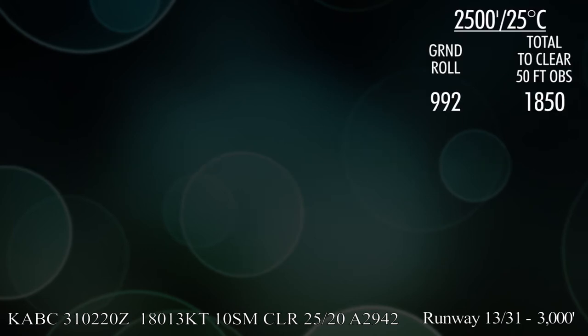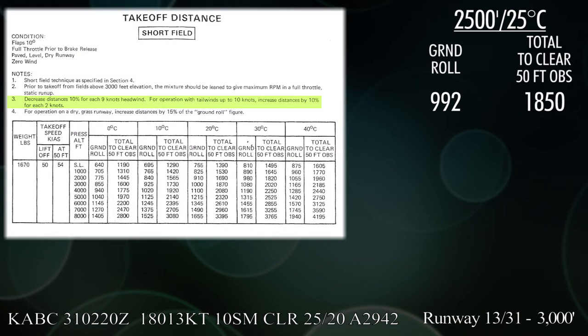All right. So far, so good. Now, if we look at note number 3, it says decrease by 10% for every 9 knots again. And so now we come to a little bit of a dilemma. Our wind is 180 and our takeoff runway is 13 or a heading of 130. That's not an exact headwind. So how do you find your headwind? With this lovely chart.